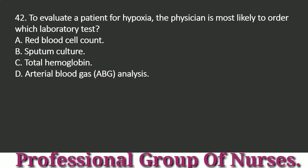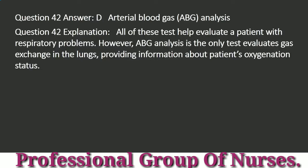Question 42: To evaluate a patient for hypoxia, the physician is most likely to order which laboratory test? a. Red blood cell count. b. Sputum culture. c. Total hemoglobin. d. Arterial blood gas (ABG) analysis. Answer: d. Arterial blood gas (ABG) analysis. Explanation: All of these tests help evaluate a patient with respiratory problems. However, ABG analysis is the only test that evaluates gas exchange in the lungs, providing information about the patient's oxygenation status.